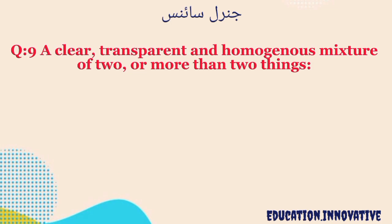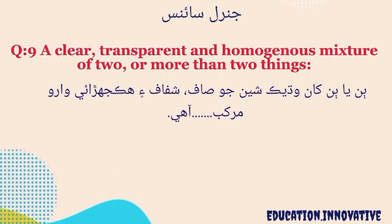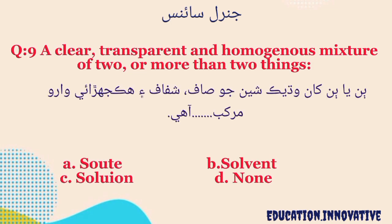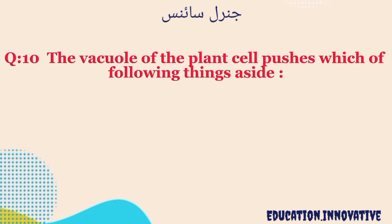Question number 9. A clear, transparent and homogenous mixture of two or more than two things — the correct answer is solution.